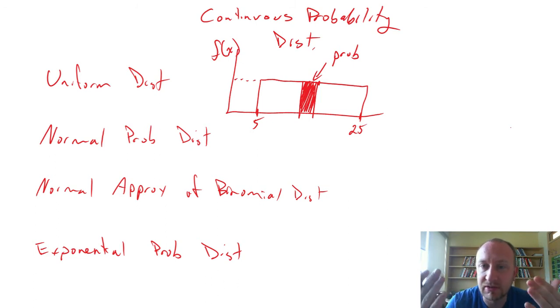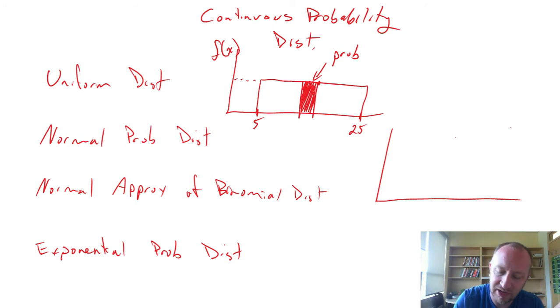So that's looking at the uniform distribution. The normal probability distribution, I'm going to guess that you've probably seen this one before. This is often the one that is referred to as the bell curve. Because, well, it kind of looks like a bell.